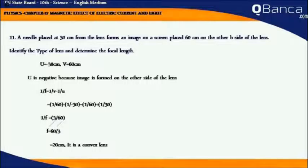U equals minus 30 cm, V equals 60 cm. U is negative because the image is formed on the other side of the lens.